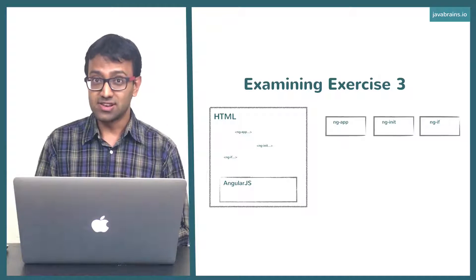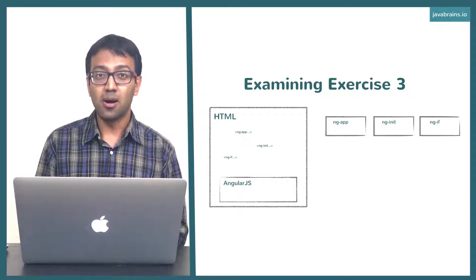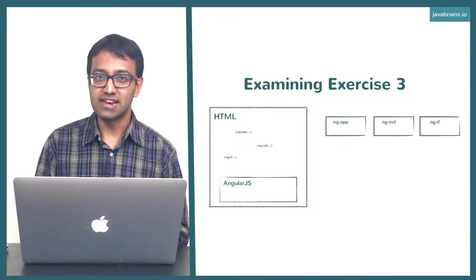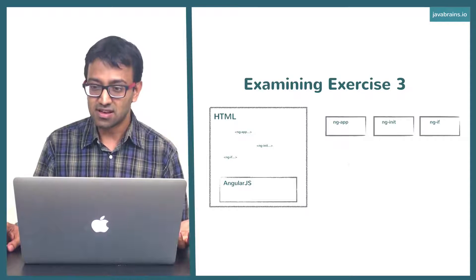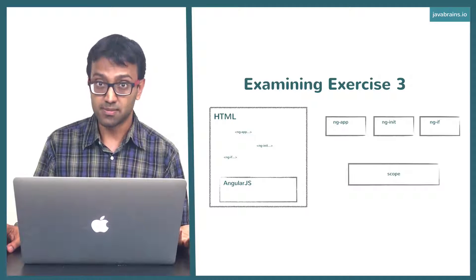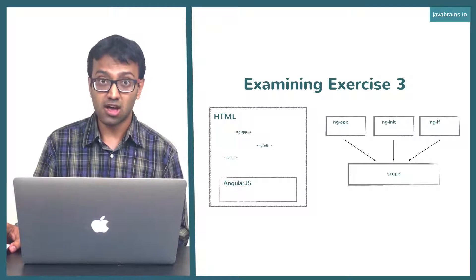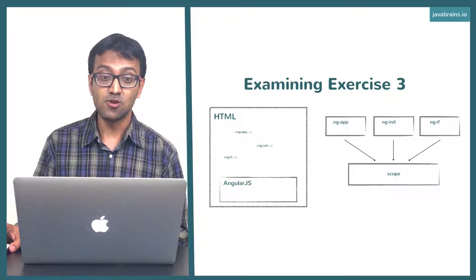The way they talk to each other is by sharing a common space. A common space where all these variables are declared. The space is called the scope. All these three directives actually talk to each other by using the scope.